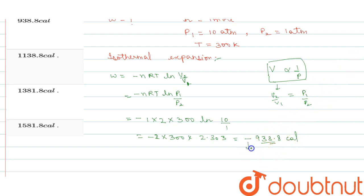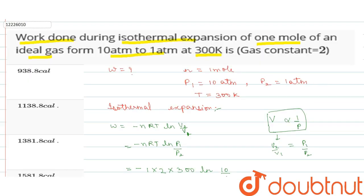The answer shows work done is negative. Expansion means work done by the system. Positive work done means work on the system. Work done value is 938.8 calorie.